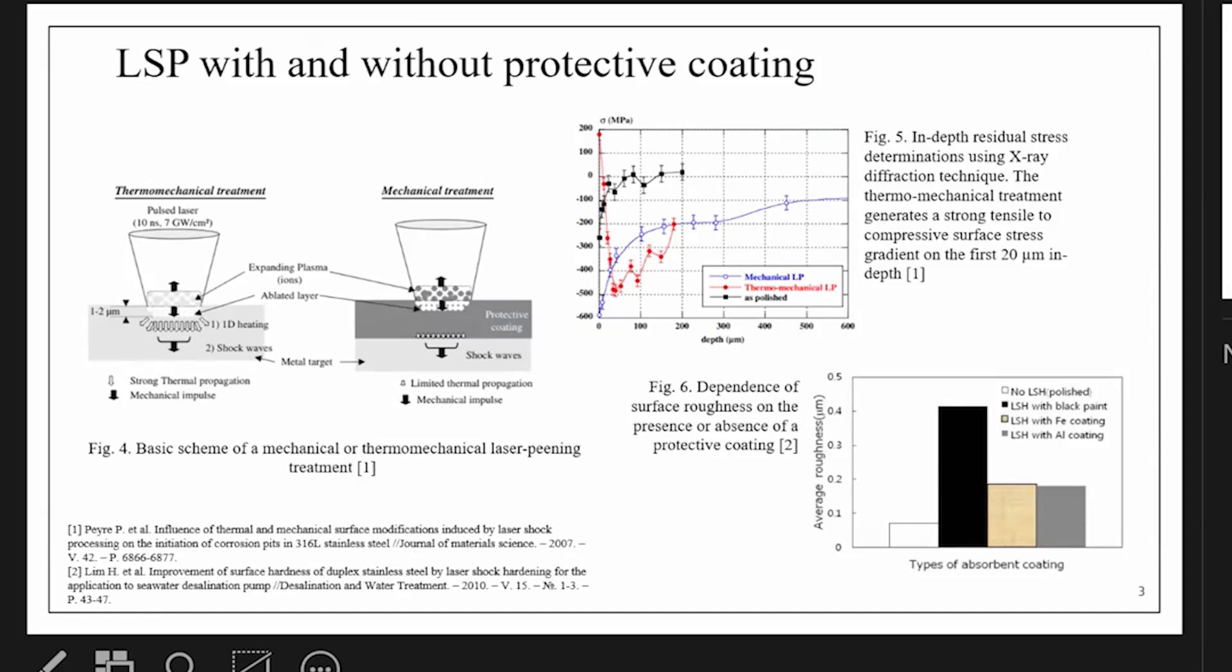As it's clear from the name of this layer, this coating fulfills two important functions: protection of the surface of the material from damage, and absorption of energy. Based on this, there are two types of laser shock peening in the literature: thermo-mechanical laser shock peening and mechanical. Thermo-mechanical is laser shock peening without protective coating, and mechanical is with protective coating.